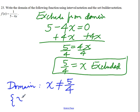The set builder notation would be the set of all x values such that x is a real number, or a member of the set of real numbers, and x cannot be 5 over 4.